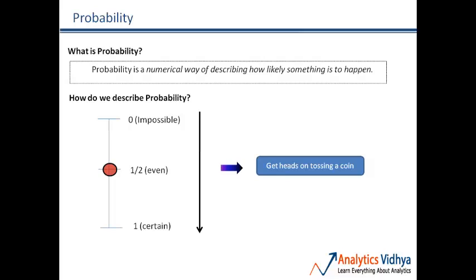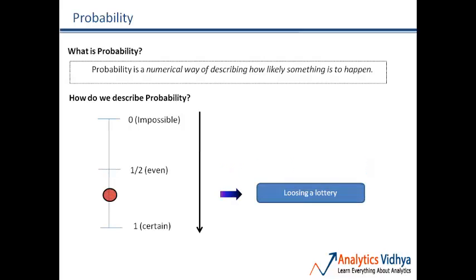Taking an event with a probability of half: getting heads on tossing a coin. When I toss a coin, it can only have two outcomes — heads or tails — and hence the probability of getting heads is half. The range half to one is the counter event of something like winning a lottery, so losing a lottery will always have a probability between half and one.